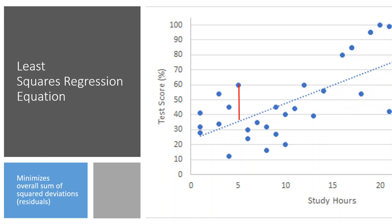When I look at this blue line, there's a distance between the blue line and an actual data point. At a particular x value, the line predicts a certain y value, whereas in reality this person had a different y value. That red line represents the error that my prediction line made. If I have this error for each of the dots, and I were to add up all of the errors, those on the upper end would counteract the distance for those on the bottom.